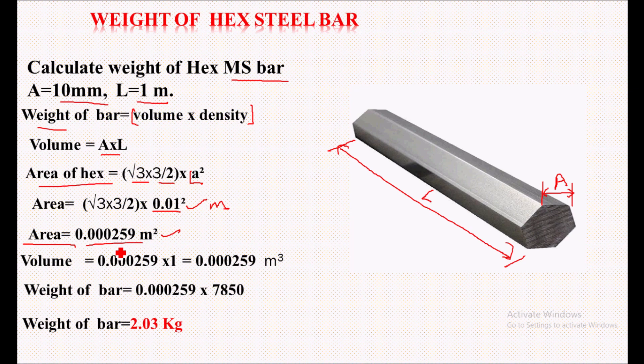Volume is nothing but area into length. So area is calculated, length is 1 meter, we get the volume to be 0.000259 meter cube. We have volume, and density we'll consider for steel. Density of steel is 7850 kg per meter cube. After calculating this, we get the weight of bar to be 2.03 kg.